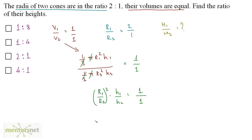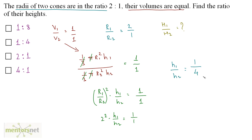Now r1 by r2 is 2 by 1, so we have 2 squared times h1 by h2 equals 1 by 1. Therefore h1 by h2 equals 1 by 2 squared, and 2 squared is 4, so h1 by h2 is 1 by 4.